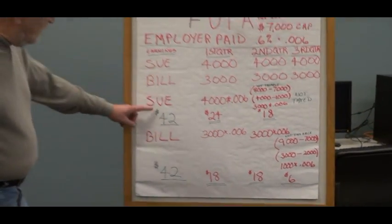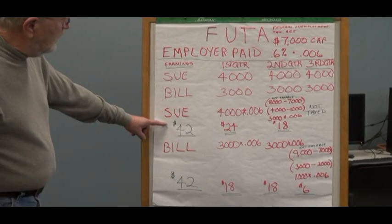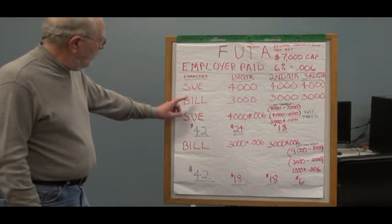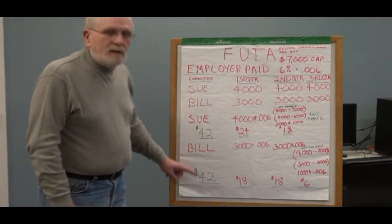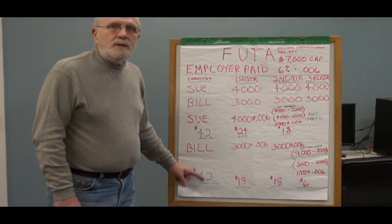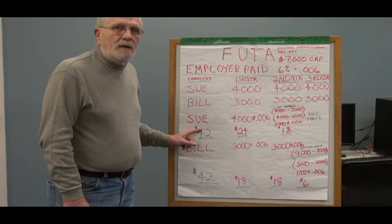Notice that the total FUTA taxes paid for both Sue and Bill is going to be $42 for the year. This is the maximum FUTA tax that will be paid on any employee in any year.